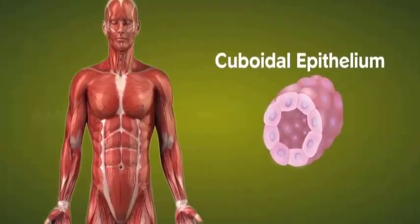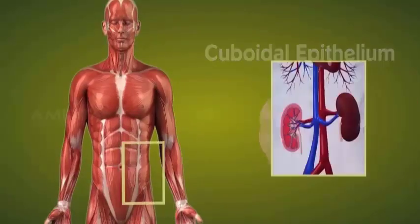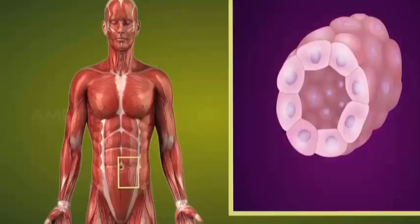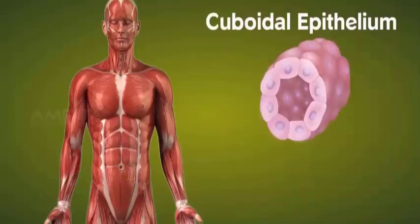Cuboidal epithelium aids in absorption and provides mechanical support. It forms the lining of kidney tubules. It is shaped like a cube.